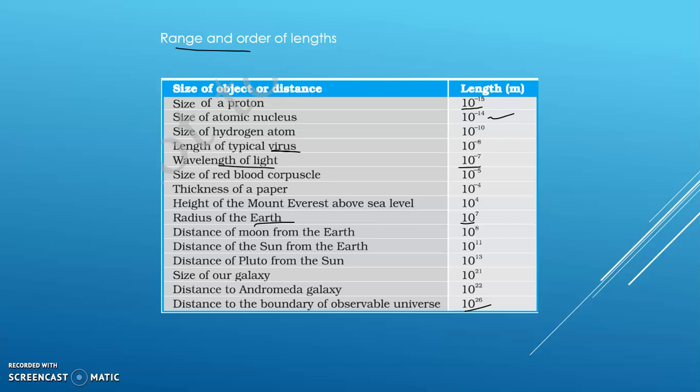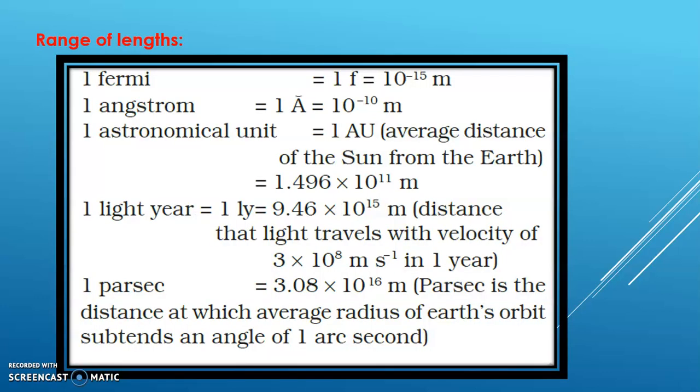So we have a full range: the size of the proton, the size of the nucleus, the size of the hydrogen atom, the radius of the Earth, the distance of the Earth from the Sun, and the size of the observable universe. This gives us the standard range of length.